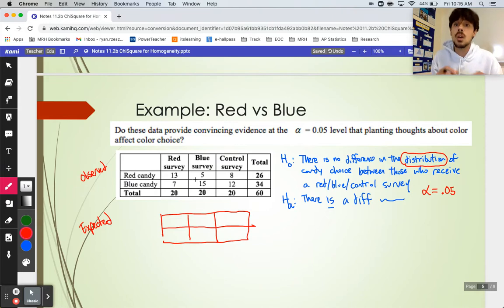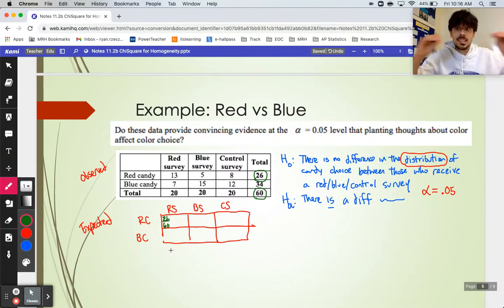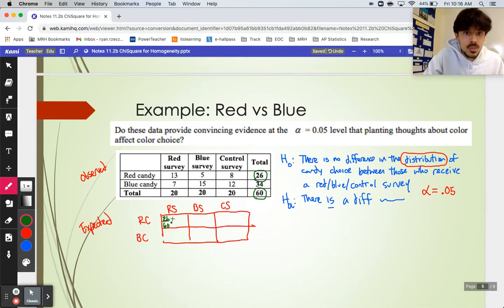So I will remind you how you find those, and then I'm going to show you a sweet shortcut from your calculator. I'm going to set this up the same way here, a little 2×3 table. When you make your expected counts, you need to make sure you show work for at least one of them. If I didn't have my other table right there, I would probably want to label everything. Red survey, blue survey, control survey, red candy, and blue candy. I explained this last video, but let's talk about how you would actually calculate these expected counts. 26 people chose red candy altogether out of 60. So I would take 26 out of 60. That's the percentage of people who like red candy.